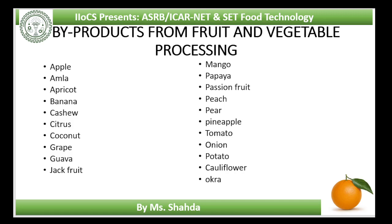In the case of citrus fruits, major waste materials are peel, rag, seeds and sludge from lime and oranges. The peel can be utilized for getting peel oil, which has a number of uses. The rags can be used for preparation of citrus patty, marmalade and orange toffee. The dried rag can also be used as cattle feed.